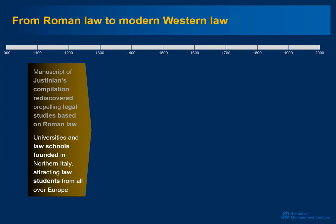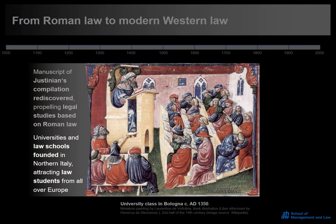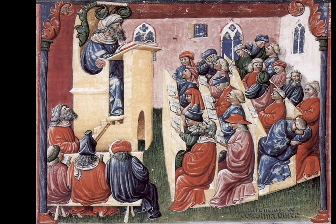Their reputation soon extended far beyond. They attracted students from all over Europe, with the most famous center of studies being Bologna. The University of Bologna, with its celebrated law school, was an elite institution. As the picture illustrates, university teaching in those times was not so different from what it is today — with a professor giving his lecture and students listening or not, some of them taking notes, others falling asleep or talking to each other.